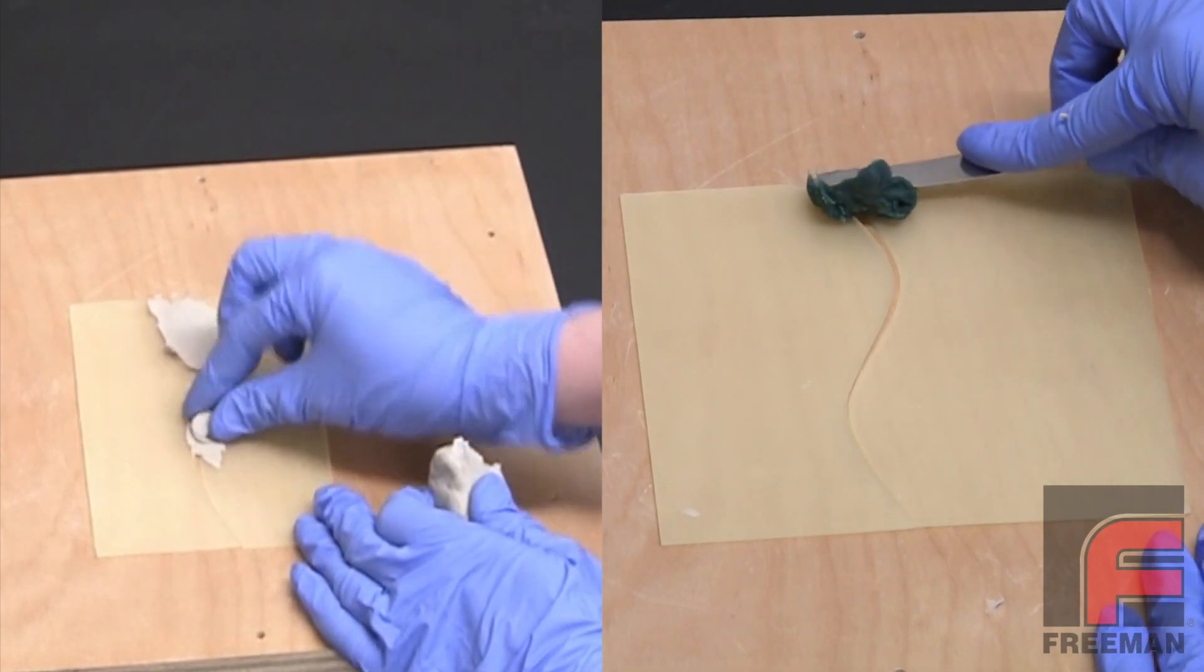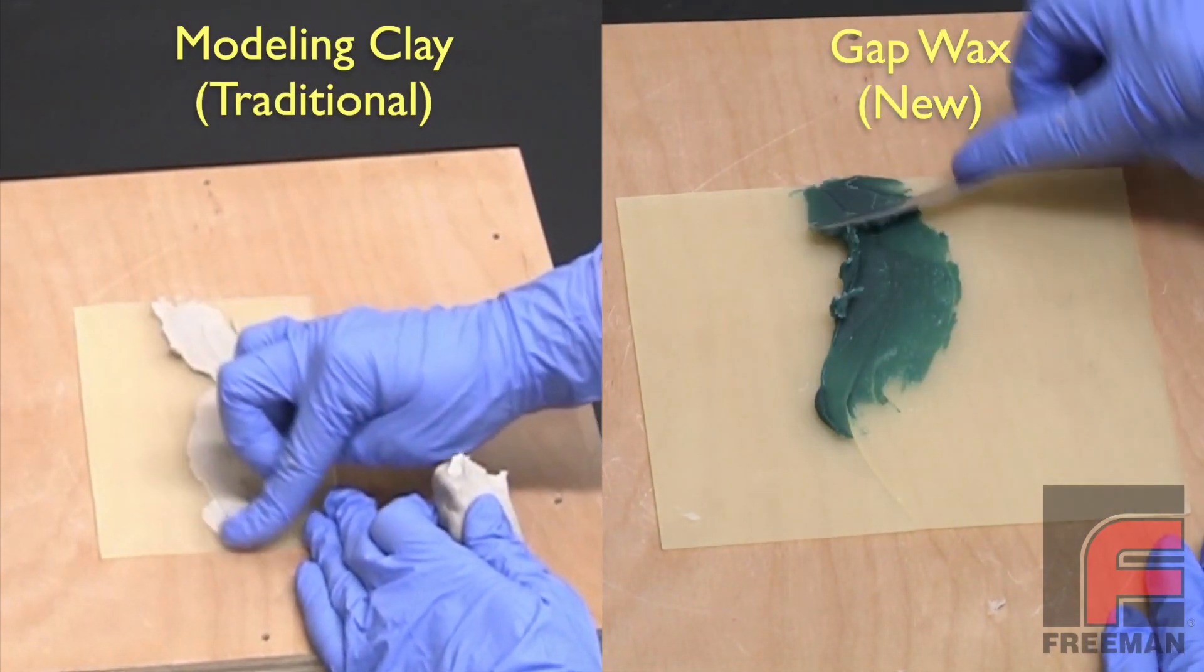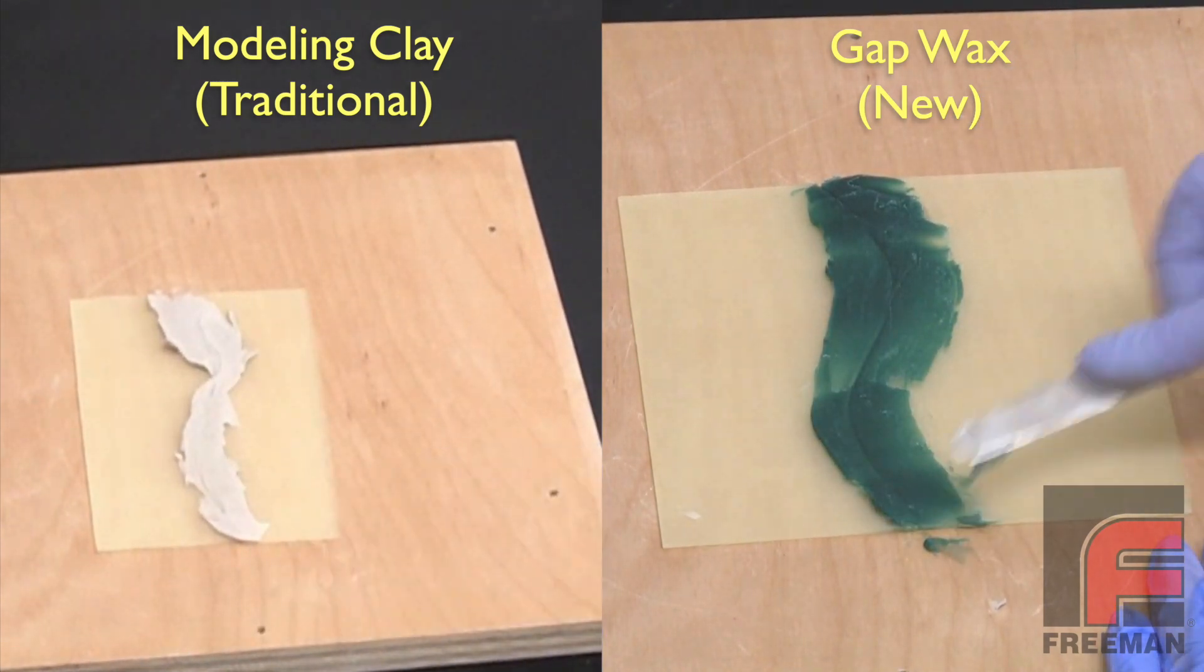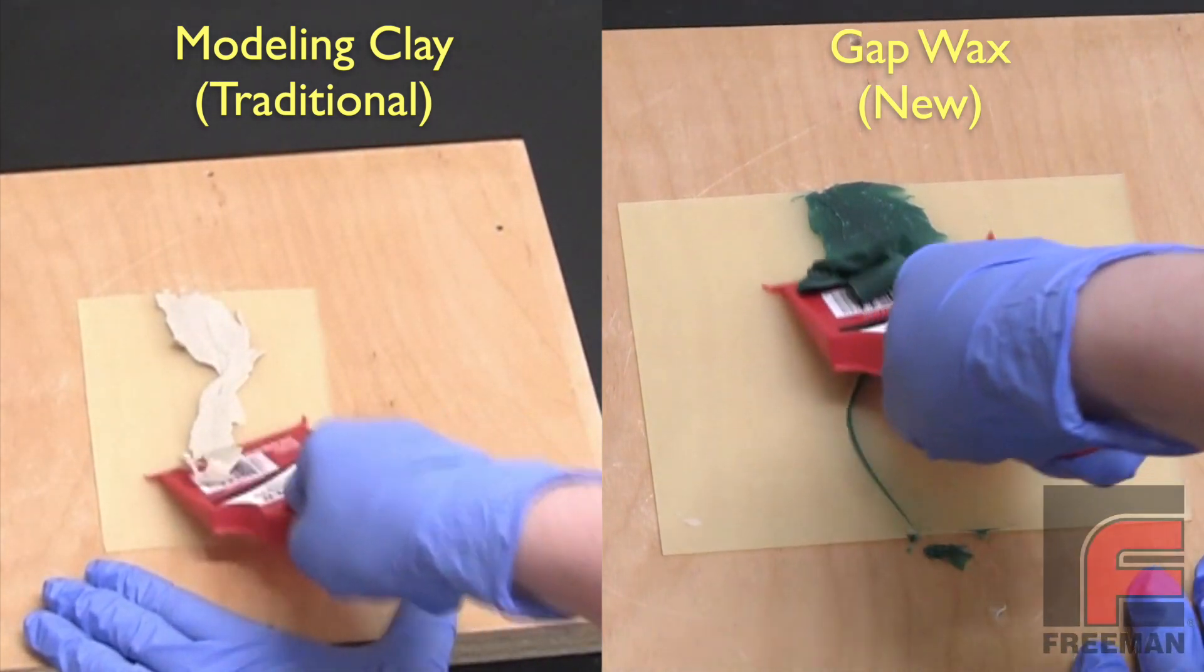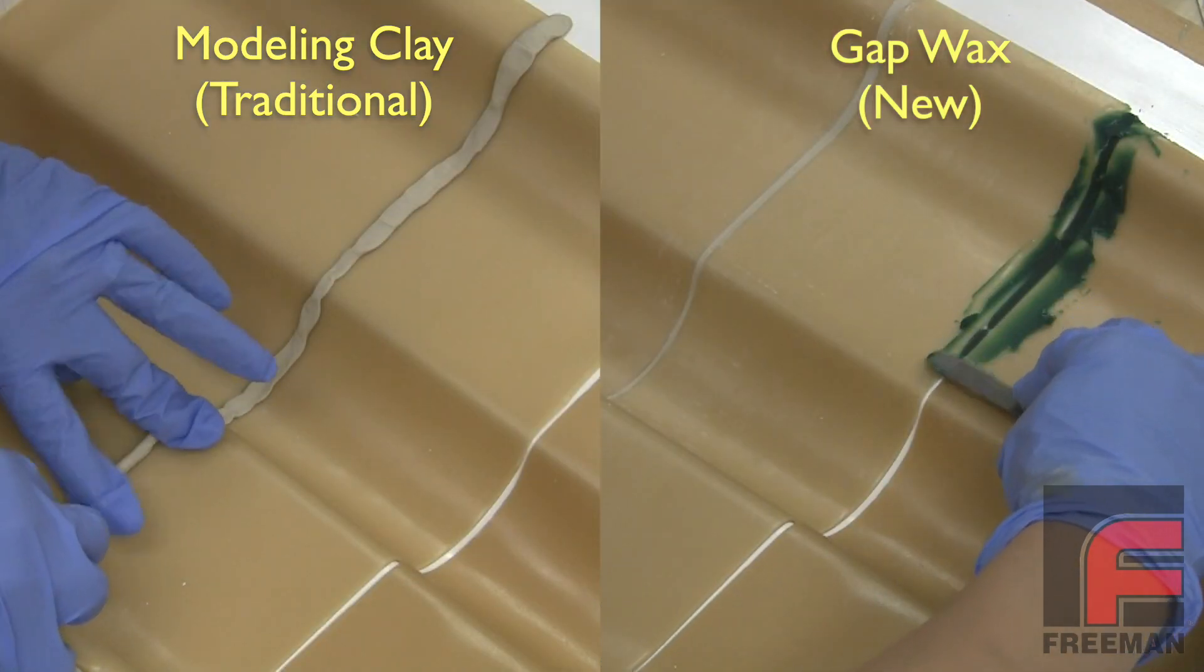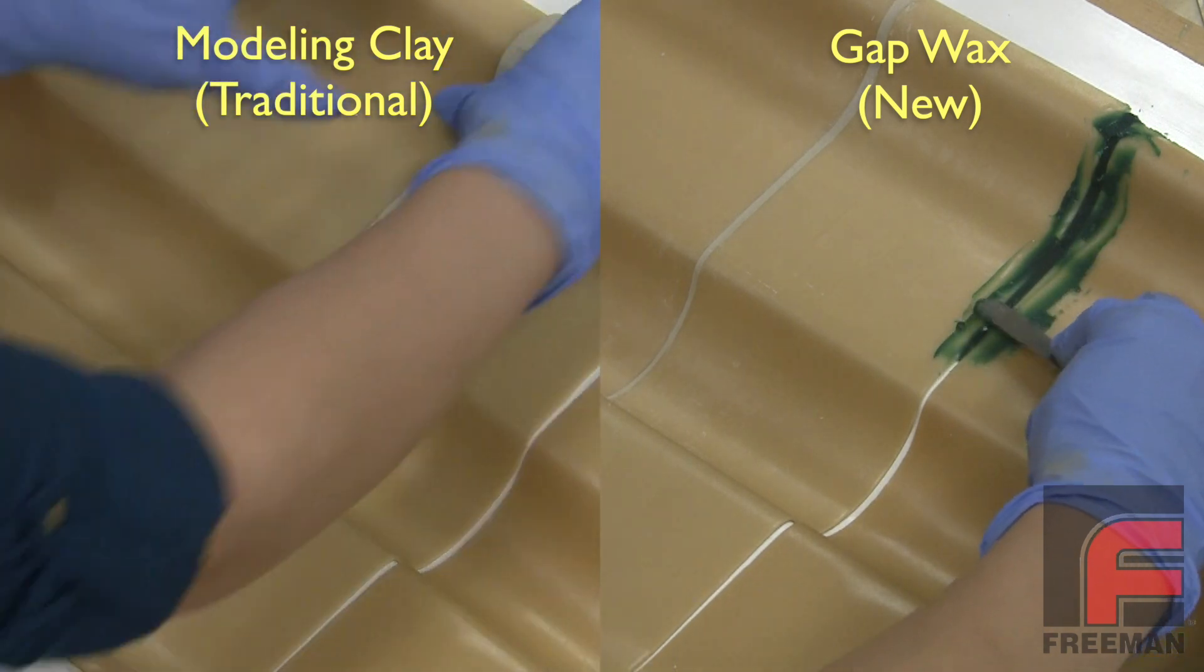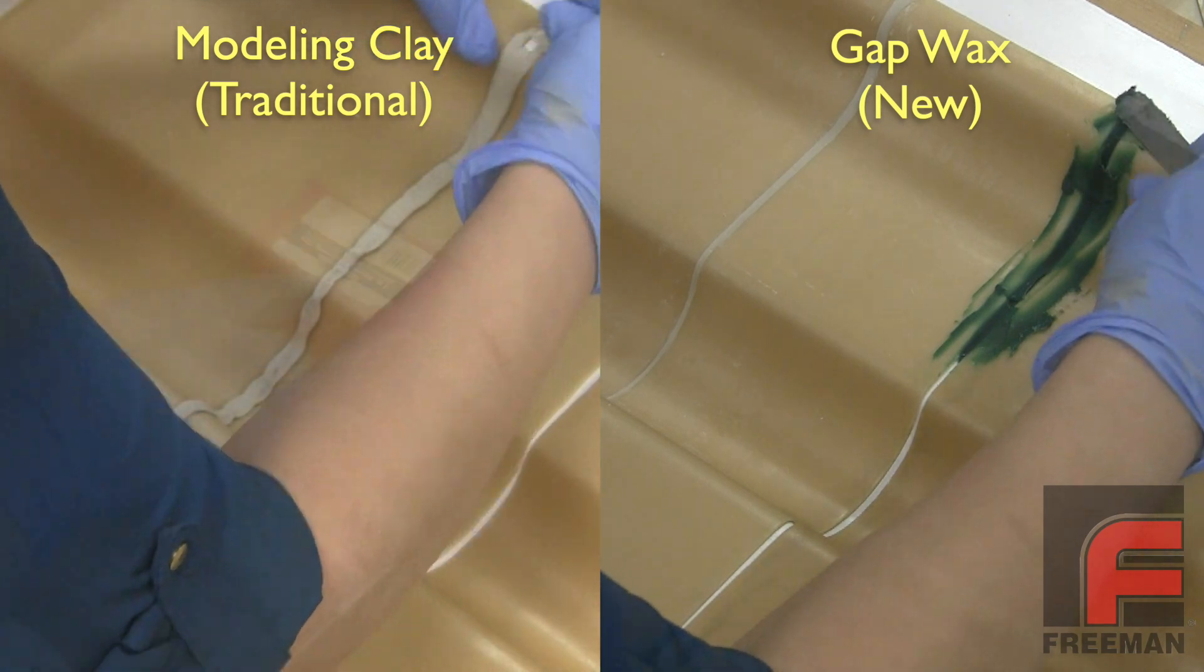Since we originally shot this video, we invented something new called gap wax, which is a much better way to fill the seams between sheets of wax. Clay works and has been working for decades, but gap wax is softer and more malleable than clay, so it applies quicker. And then the excess scrapes off much faster and cleaner. In professional environments where time is money, gap wax is a no-brainer for surface casting or virtually any other sheet wax application.